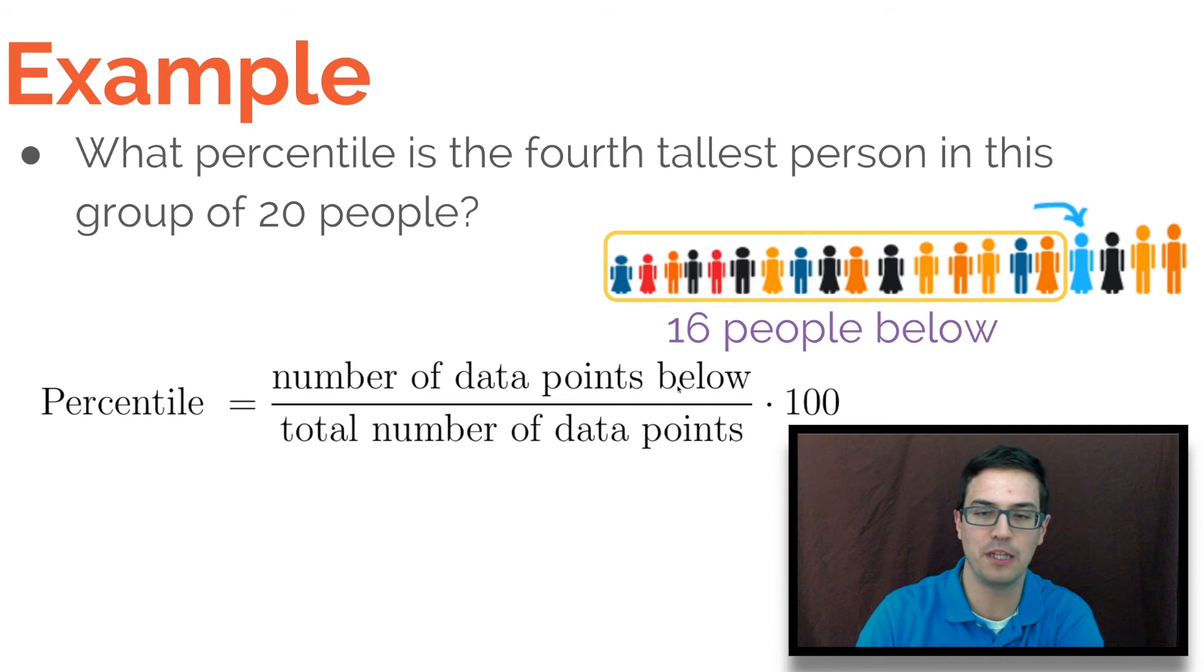So that means this number of data points below right here is going to be equal to 16. And we're going to divide this by the total number of data points, which is 20. So we're going to have 16 divided by 20 times 100. Next, we're going to throw all that in our calculator and we're going to get 80th percentile.